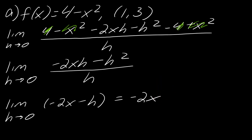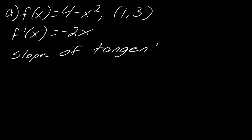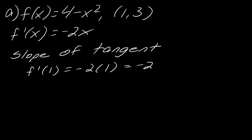So this is the first part — this is my f'(x). Now, this is not the tangent line. This is how you figure out the slope of the tangent line. To find the slope of the tangent line, you plug the given point into the derivative. So I evaluate f'(1) — I just need the x-coordinate from that point. Plugging in 1, I get negative 2. So this is our slope m.